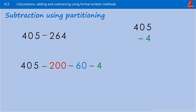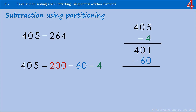405 take away 4 is 401. Take away 60 — if you know 400 take away 60, you can easily add one on: 400 take away 60 is 340, so 401 take away 60 is 341. Now we just need to take away the 200.